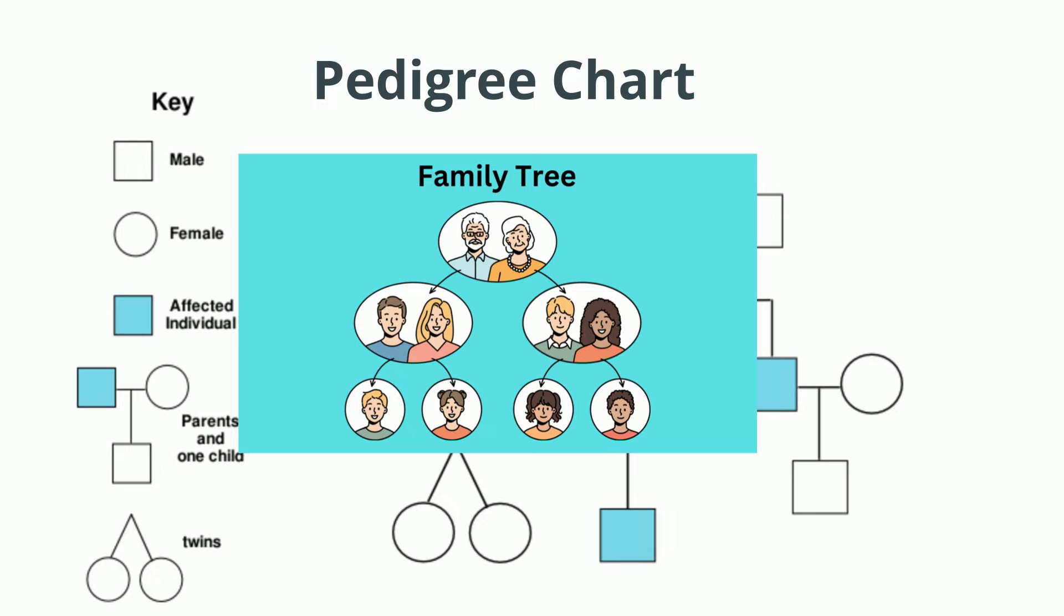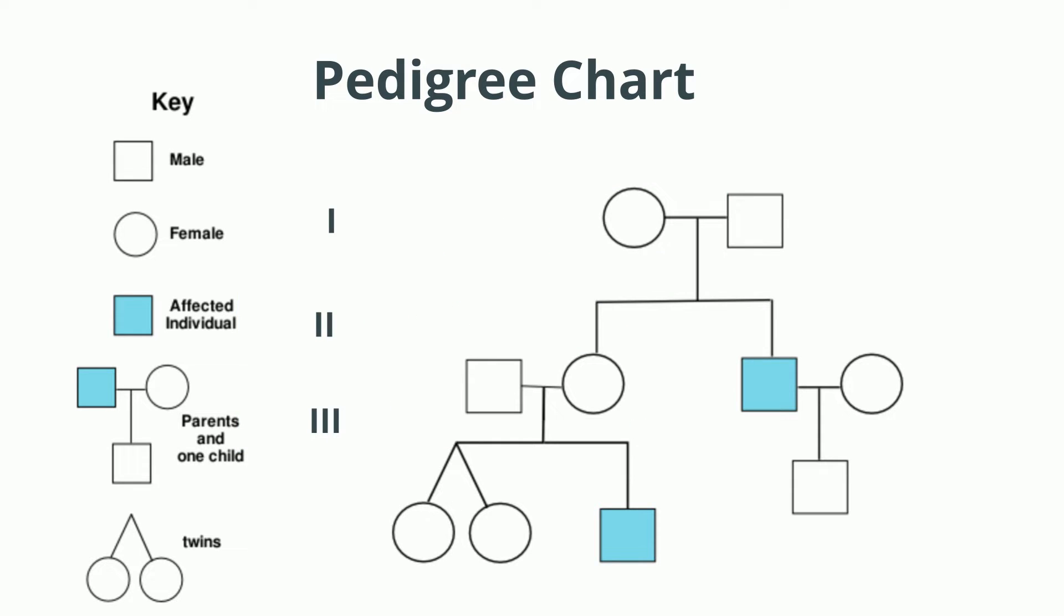Let's first take a look at the symbols and lines and see what they tell you. A circle represents a female. A square represents a male. Now, if a person has the trait or disease, it will be shaded in. If it's not shaded in, it does not have the trait or disease.